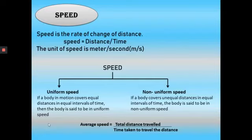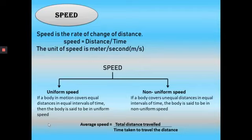If a body in motion covers equal distance in equal intervals of time, the body is said to be at uniform speed. If a body covers unequal distance in equal intervals of time, the body is said to be at non-uniform speed. Average speed is equal to total distance traveled divided by time taken to travel the distance.